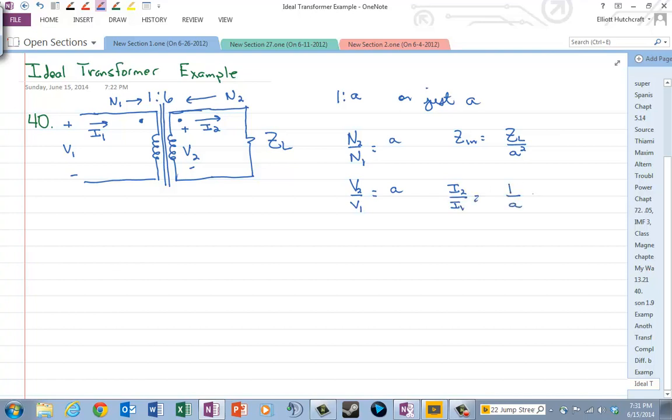Now notice from those two equations right there, V2 over I2, well you can see in this example, V2 is the voltage across ZL, I2 is the current through ZL, so V2 over I2 is equal to ZL, and if you talked about the input impedance right here, then that would be V1 over I1, then that would be V1 over I1 is equal to Zn.